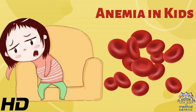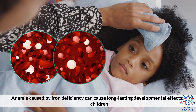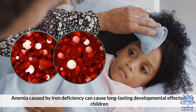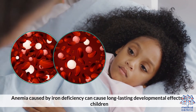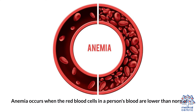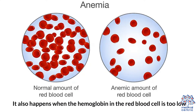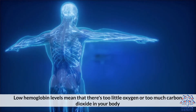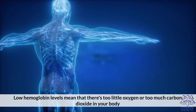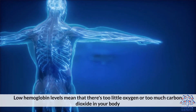Today's topic is anemia in kids. Anemia caused by iron deficiency can cause long-lasting developmental effects in children. Anemia occurs when the red blood cells in a person's blood are lower than normal, or when the hemoglobin in the red blood cell is too low. Low hemoglobin levels mean there is too little oxygen or too much carbon dioxide in your body.